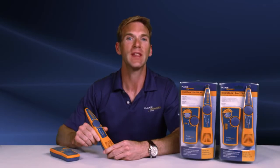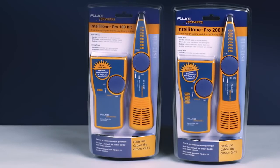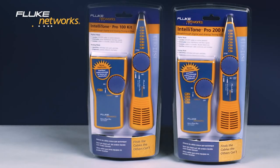Find cables the others can't. Get the IntelliTone Pro from Fluke Networks. There are two different models to choose from. The IntelliTone Pro 100, designed for single-line telco applications, and the 200, used for two-line applications, and includes a jack on the probe for wire mapping.